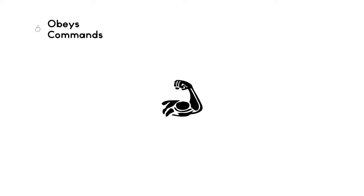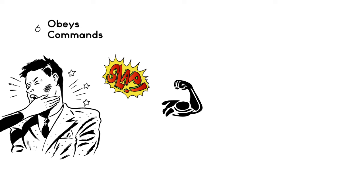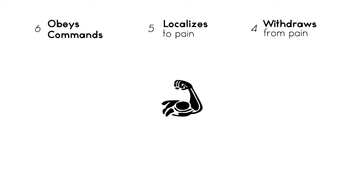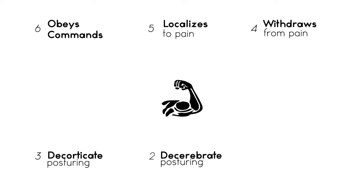Finally, for the motor response. If a patient can follow commands, I give them the total points — 6. If the patient does not follow commands, they are likely confused or seemingly unconscious, so the next thing to do is apply a painful stimulus. I like to take the bell of my stethoscope and press hard on a finger or toe. If the patient pushes you away, they are localizing — give them a 5. If they pull away or withdraw from pain, give them a 4. If the patient has abnormal flexion or decorticate posturing, that is a 3. If the patient has abnormal extension or decerebrate posturing, that is a 2. And if the patient isn't moving at all with a painful stimulus, that would be a 1.